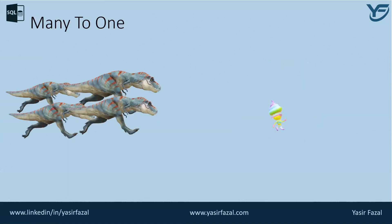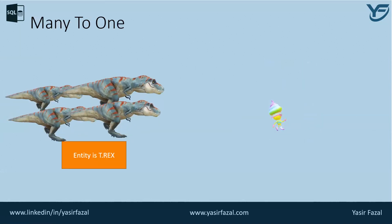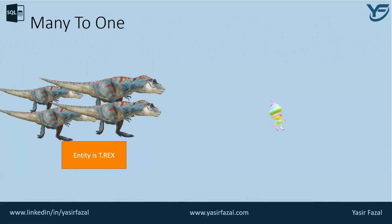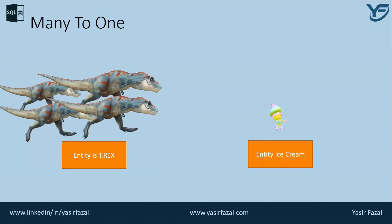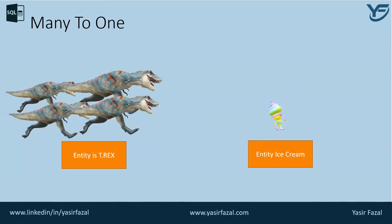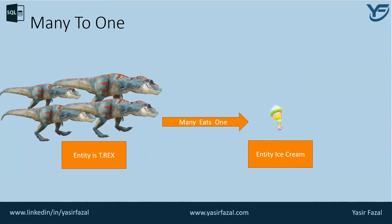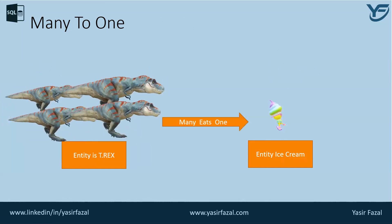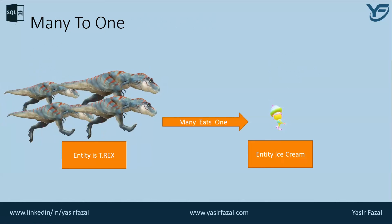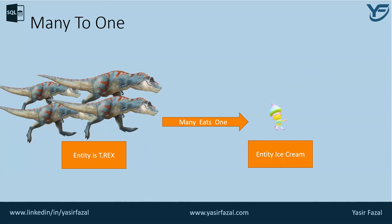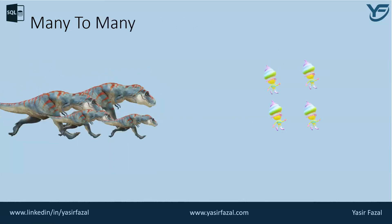Next is many-to-one. There are many T-Rexes and there is only one Ice Cream, so many T-Rexes would like to eat only one Ice Cream.